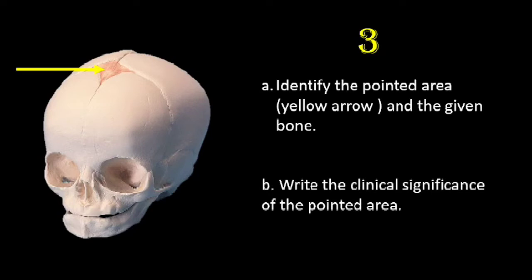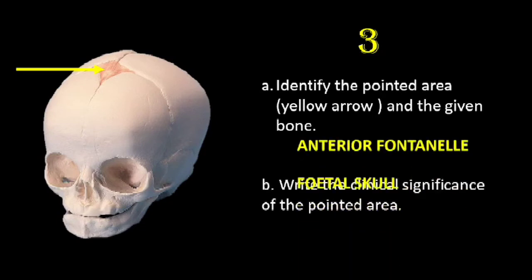The next question is: identify the pointed area marked by the yellow arrow and write the clinical significance of the pointed area. This is the fetal skull — please have a look at the video on fetal skull that I have already taken. The pointed region is the anterior fontanelle. These are membranous gaps, and the anterior fontanelle has a diamond-shaped outline.